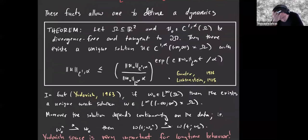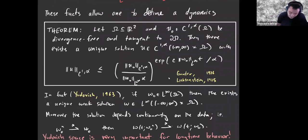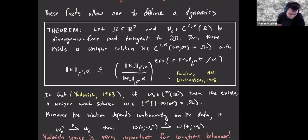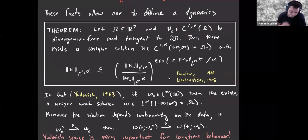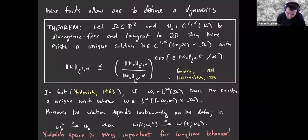There's another space where the Euler equation forms a dynamical system: if you consider initial vorticity which is just L-infinity, this is a result due to Yudovich in the 60s, then there's a unique weak solution in the same class. Moreover, the solution depends continuously on the data in the weak-star topology. So if you take a weak-star limit of the data, the solutions weak-star converge.